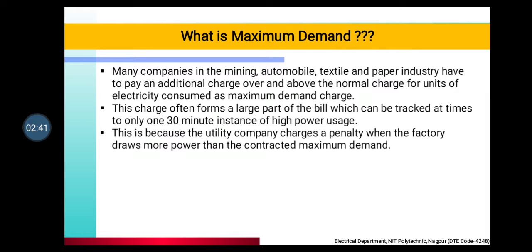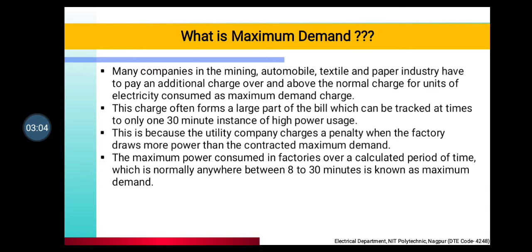What is a utility company? Utility companies are those from where you get electricity — the generating station. You have to pay a penalty to the electricity board because you have consumed more load and more electricity than what was declared. So the maximum power that a factory consumes in a period of time — normally between 8 to 30 minutes — is called maximum demand. The highest demand from the total load when electricity is being used is the maximum demand of electricity consumed in your company.